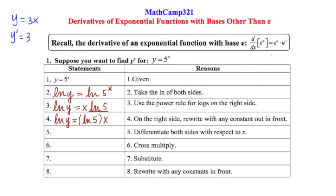We're going to take the derivative with respect to x. When taking the derivative of a natural log expression, the argument goes in the denominator and its derivative goes in the numerator. When we focus on the right-hand side, it's a situation just like we have up here, so the derivative over here is just going to be ln5. Our next step will be to cross multiply.